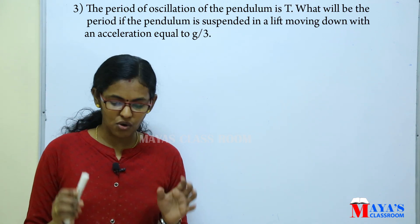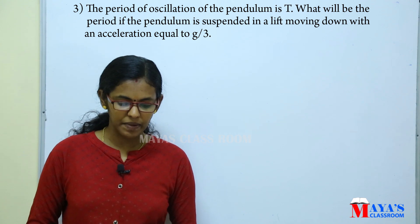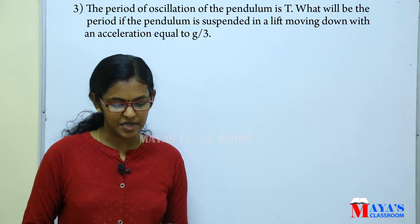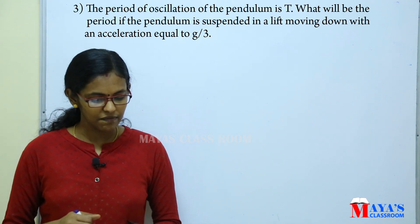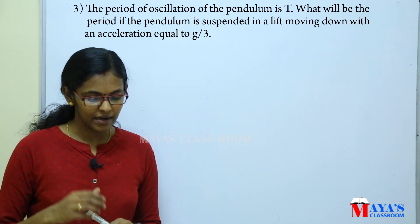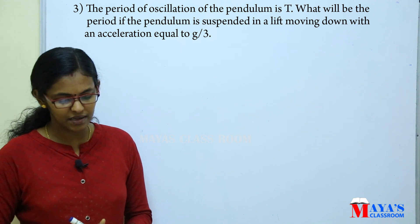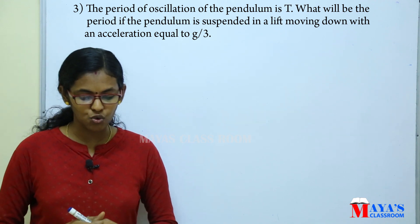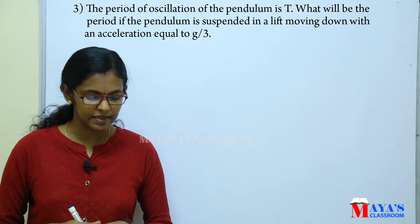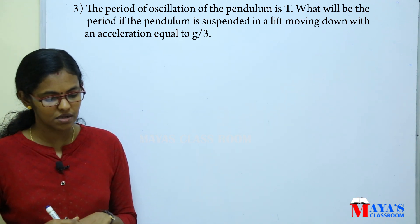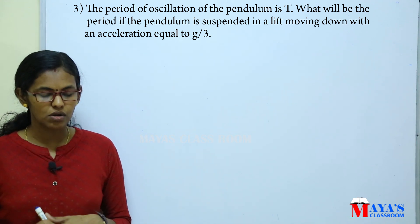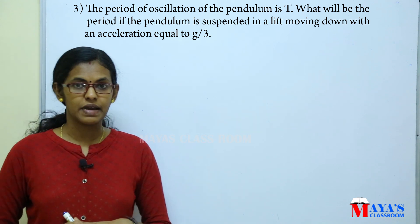The period of oscillation of the pendulum is capital T. What will be the period if the pendulum is suspended in a lift moving down with an acceleration equal to g divided by 3?